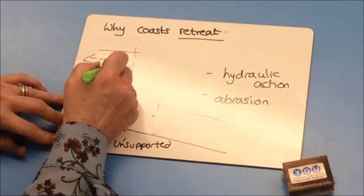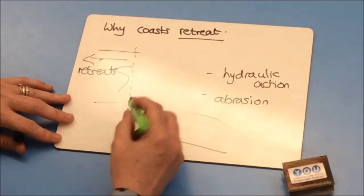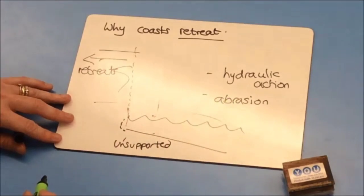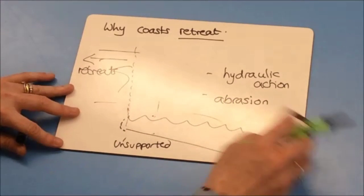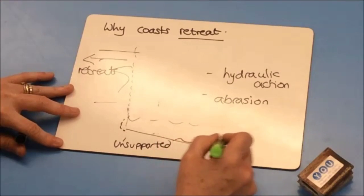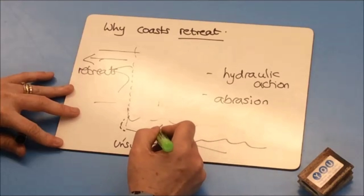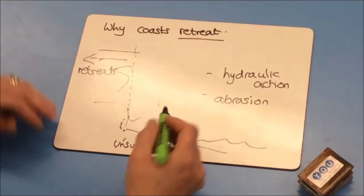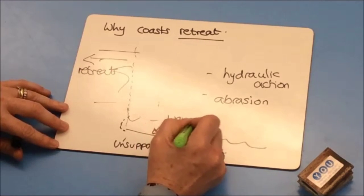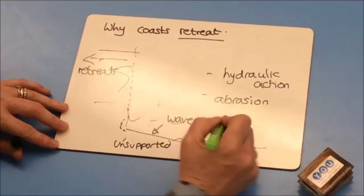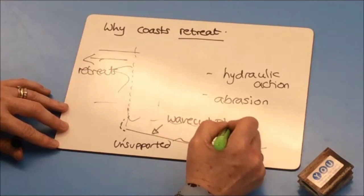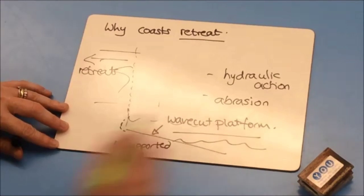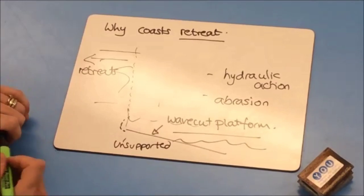The base of the cliff is unsupported and will eventually collapse, so the cliff retreats. At high tide the cliff will look like that, but at low tide you see an exposed piece of rock — that is a wave cut platform.